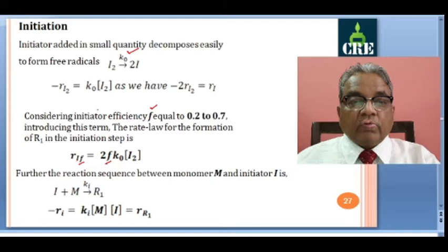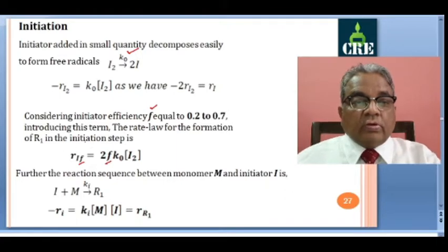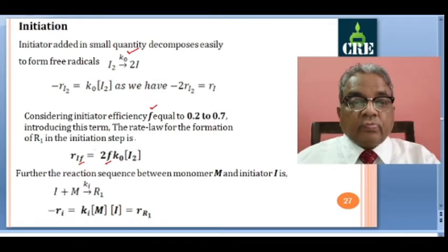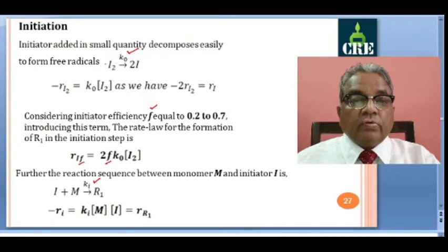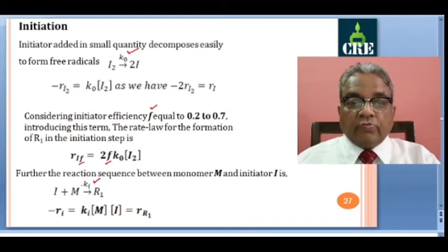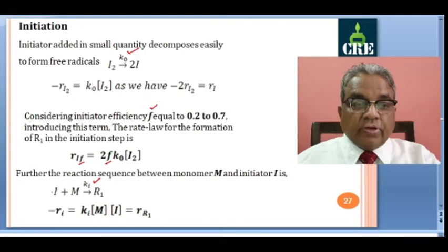The rate of formation of I is twice the rate of disappearance of I2, so it is 2·K0·[I2], multiplied by efficiency F. For the initiation step, we write the rate of formation of radical R1 with rate constant Ki. Initiation starts after the formation of free radicals, and the reaction sequence is: free radical I plus monomer giving R1.